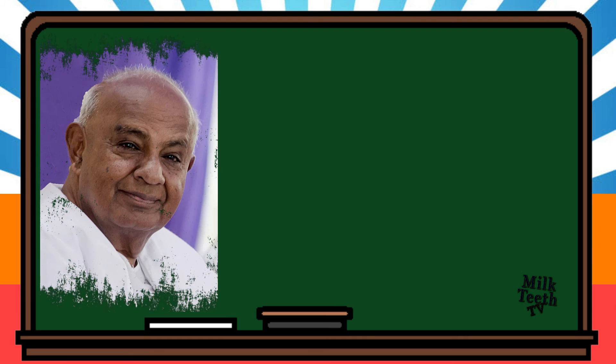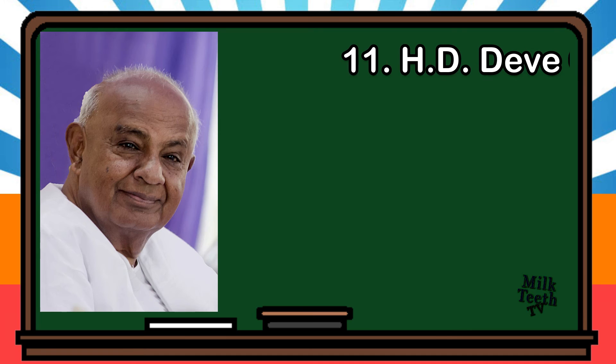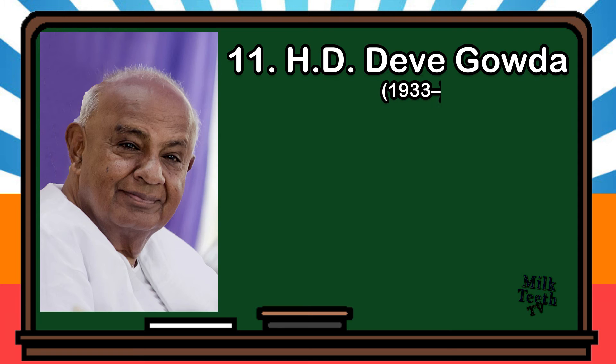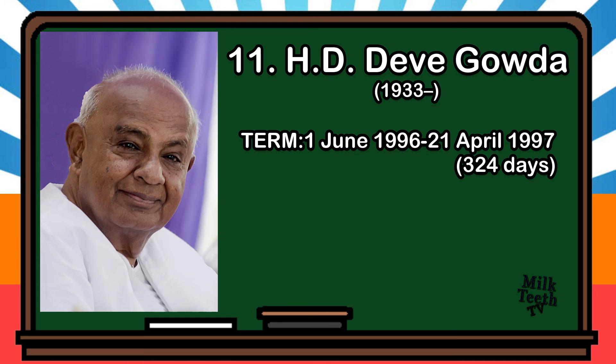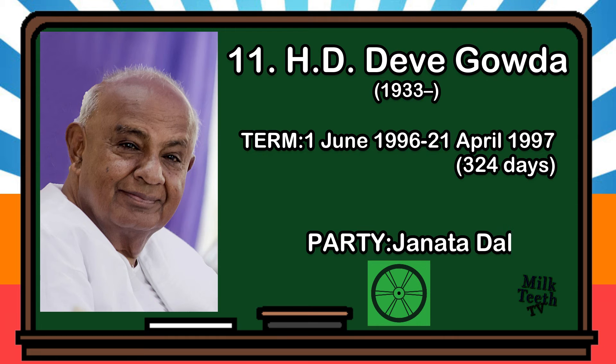The eleventh Prime Minister of India was H.D. Deve Gowda. He was born in 1933. His term began on 1st June 1996 and lasted to 21st April 1997, for a period of 324 days. Party: Janata Dal.